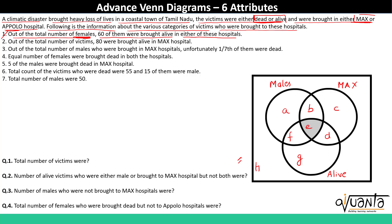The first statement: out of the total number of females, 60 of them were brought alive in either of these hospitals. Since we are talking about females, we exclude the whole set of males. They were brought alive, so we concentrate on the set of alive. That means we consider only D and G here. So D plus G equals 60, because these are the females brought alive in either hospital. We cannot consider C because those are dead — they lie outside the set of alive.